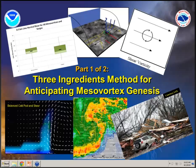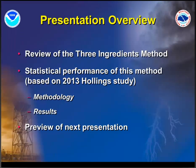Moving along, as John mentioned, there's going to be a two-part presentation. The first part will basically cover the three-ingredients method for anticipating mesovortex genesis. The presentation tomorrow, starting at 10 o'clock, will focus more on QLCS interrogation and warning strategies. Today we'll review the three-ingredients method, which was partially presented about three years ago in a webinar Ron and I did. We'll do a refresher, go into the statistical performance of this method — including a study by Hollings student McKenna Stanford — and then briefly preview tomorrow's presentation.